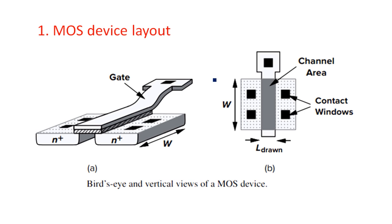Looking at the three-dimensional diagram of this MOS transistor, you have a gate terminal at the center, and on either side are the source and drain terminals. In MOS technology, gate and source are interchangeable — that means you can call either terminal the drain or the source depending upon the connections given to the transistor. Both can be treated as either source or drain because the doping concentration of both layers is the same.